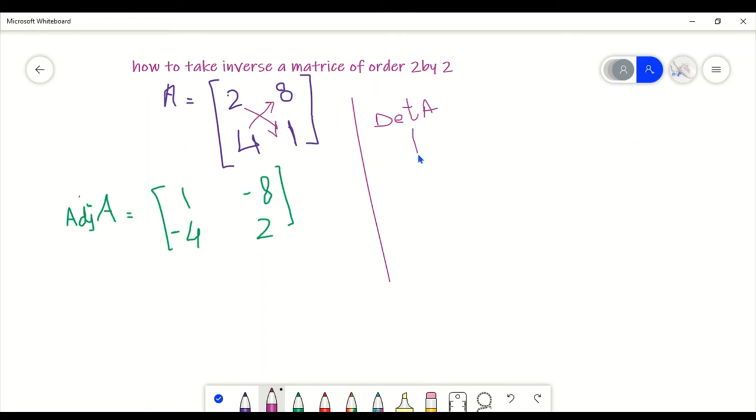Two times one is two, minus eight times four is 32. So it comes to 2 minus 32. What is our determinant? Our determinant is minus 30.